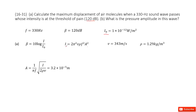We don't know the intensity yet — the only thing given is beta. But we can connect beta to the intensity I using the decibel formula. From that function, we can get the intensity I.